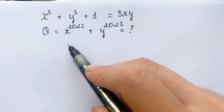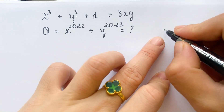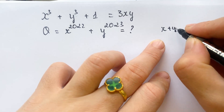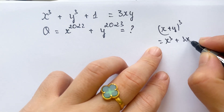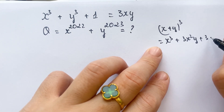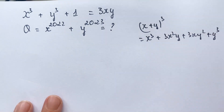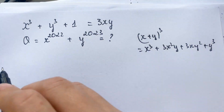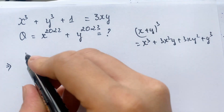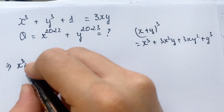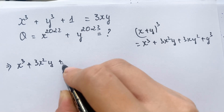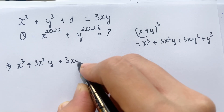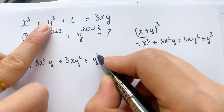Firstly, how do you choose that? Everyone can see the identity: (x + y) cubed equals x cubed plus 3x squared y plus 3xy squared plus y cubed. And so, for the equation, you can write that: x cubed plus 3x squared y plus 3xy squared plus y cubed.